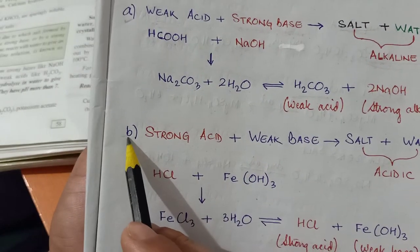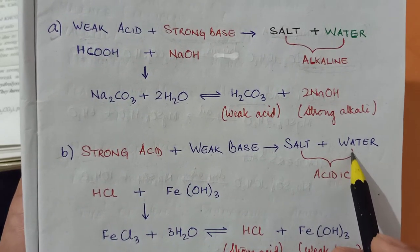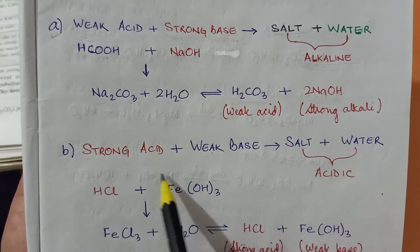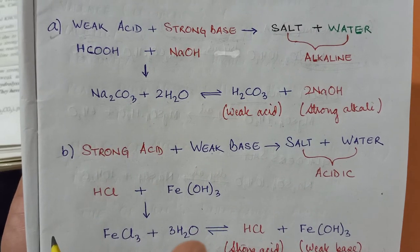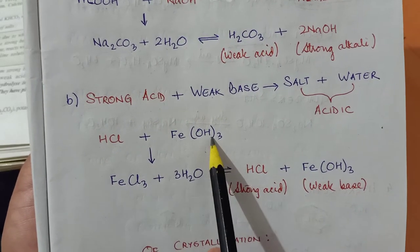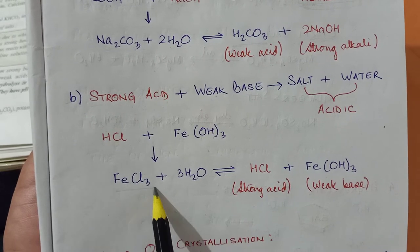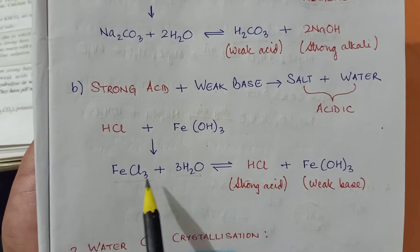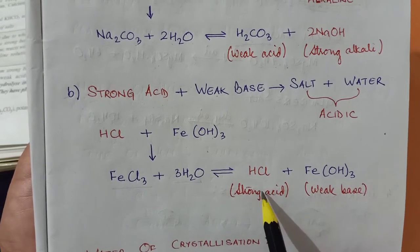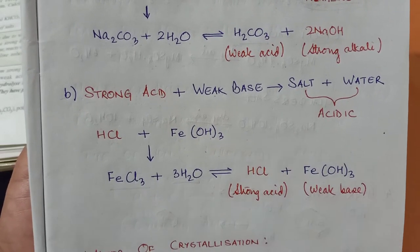Second condition: if the acid is strong but the base is weak, they will also produce salt and water, but the salt and water produced will again react with each other to give an acidic solution. For example, hydrochloric acid, which is a strong acid, reacts with iron(III) hydroxide (ferric hydroxide), which is a weak base, to produce iron(III) chloride and water. This salt and water undergo hydrolysis to produce strong acid HCl and weak base, so the resultant solution will be acidic.